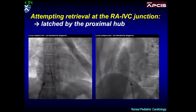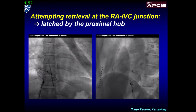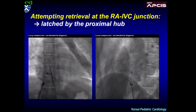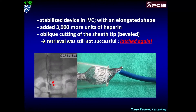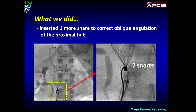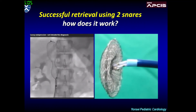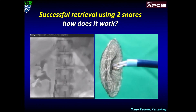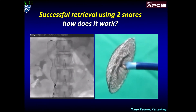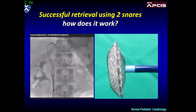We stabilized the device in the IVC with an elongated shape, then beveled the sheath tip and tried again. However, retrieval of the device was still not possible for exactly the same reason. We then inserted one more snare and held the hub in the opposite direction to correct the oblique angulation between the snared hub and the sheath. The device could be successfully retrieved using the two-snare technique. In the movie clip, you can see the second snare helps to bring the hub into the sheath.